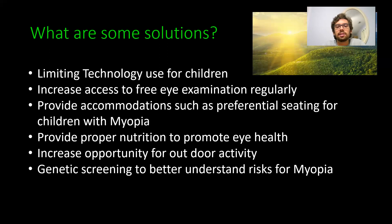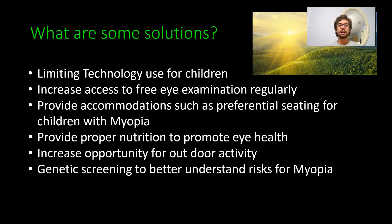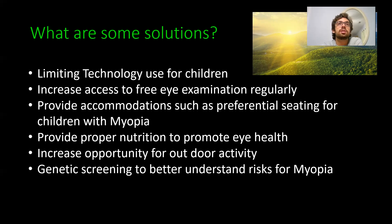Second, increased access to free eye examinations regularly. Not everyone has good insurance or gets their eyes checked regularly, but I think at least two to three times a year during a child's development, there should be opportunities for a free eye examination right at the school — so we have more regularly diagnosed cases. Third, provide accommodations such as preferential seating for children with myopia. This needs to be considered in IEPs and 504 plans. I've never really seen legislation or focus on vision, so getting it diagnosed and ensuring proper accommodations is essential.